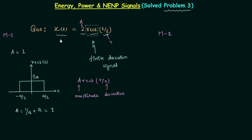So there is no need to plot the waveform of 2·rect(t/2) if you are following Method 1 — you can directly state that x(t) is an energy signal. If you know the properties, you can easily solve the question and avoid unnecessary calculations.